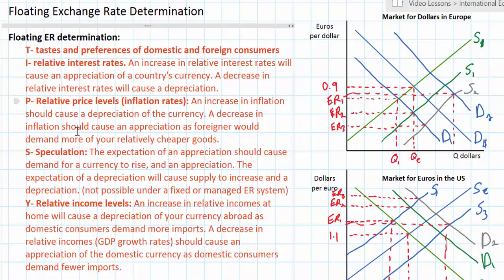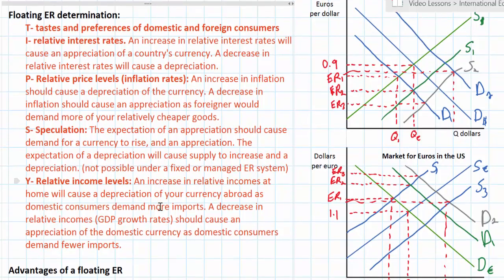Here we've got the five primary determinants of floating exchange rates, including the tastes and preferences of domestic and foreign consumers, relative interest rates, relative price levels, speculation, and relative income levels. Changes in any of these variables can cause the demand and the supply of a currency to change on the forex market and a corresponding increase or decrease in the value of that currency.